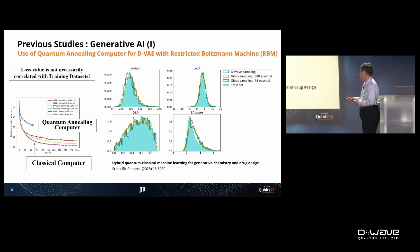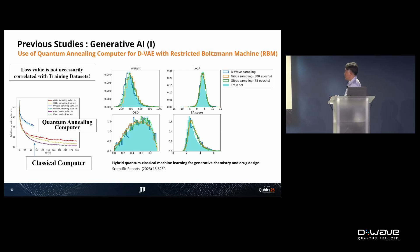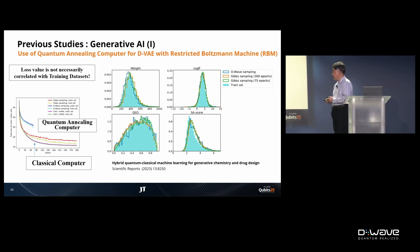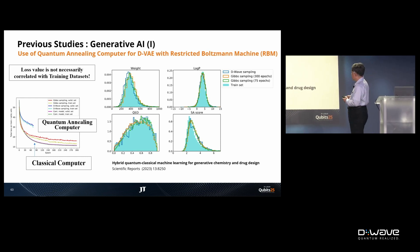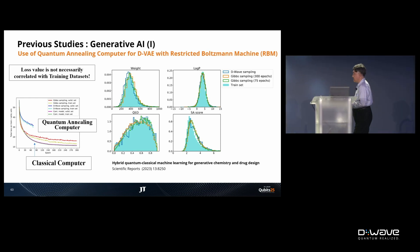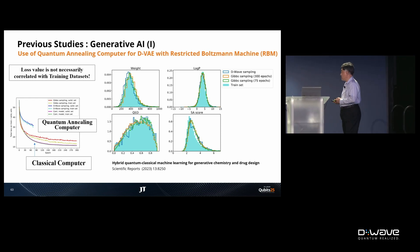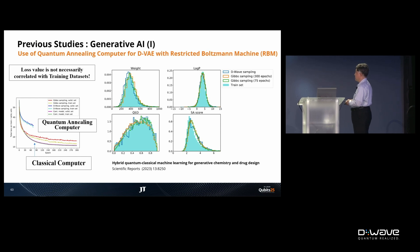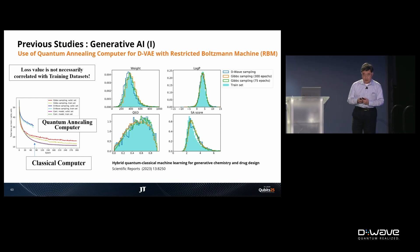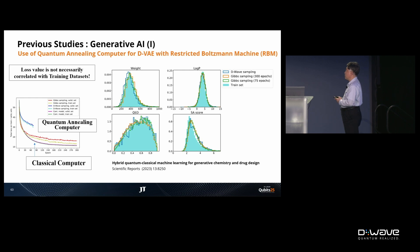Remember that when they used quantum computation, the training error did not converge. Nevertheless, the generated data distributions were almost the same as the training data set. I felt this demonstrates the true power of quantum annealing computation.